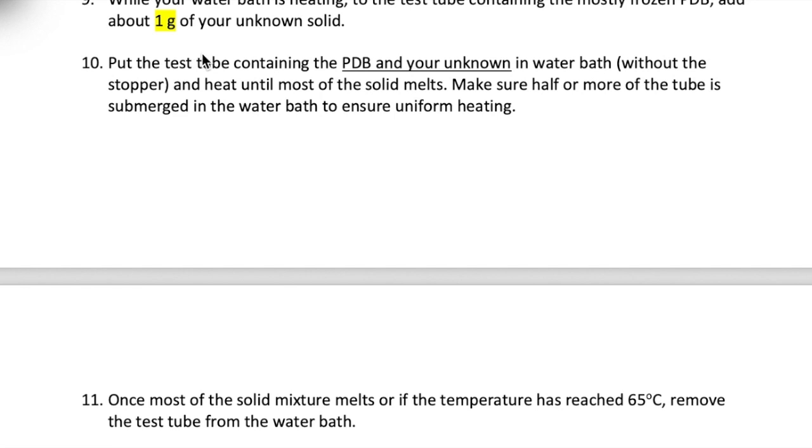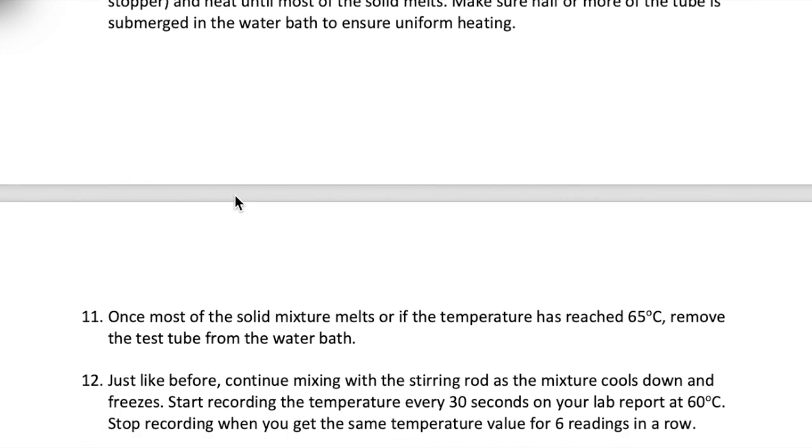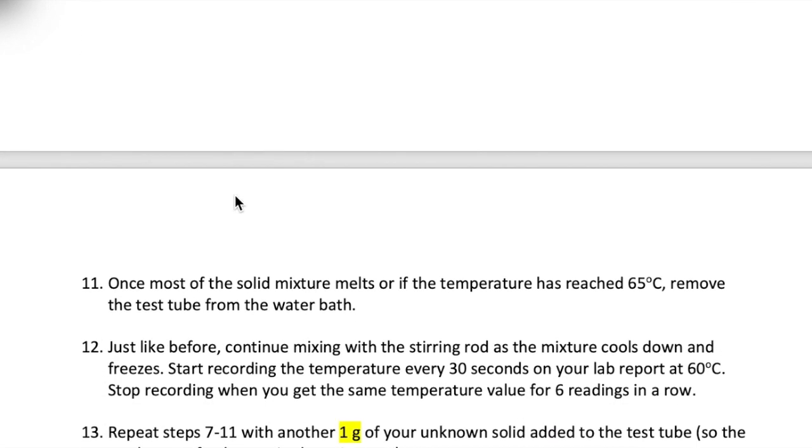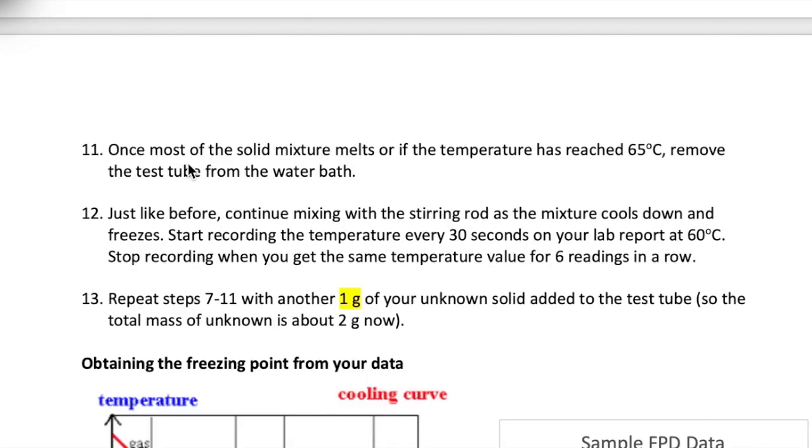Once you have the mixture of PDB and unknown solid, put the test tube back into the water bath to melt the mixture. Again, when about half the mixture has melted, put the thermometer back into the test tube to make sure that the temperature doesn't reach above 65 degrees Celsius. Keep heating until all the mixture has melted or the temperature reaches 65 degrees Celsius.